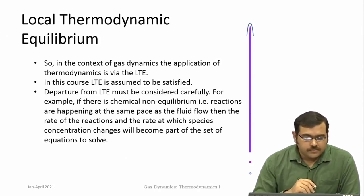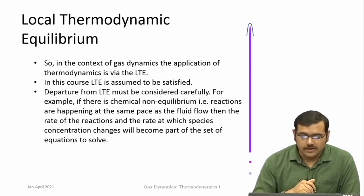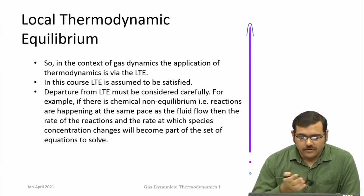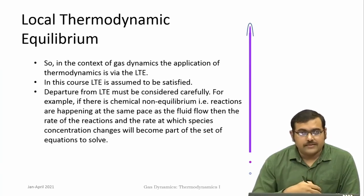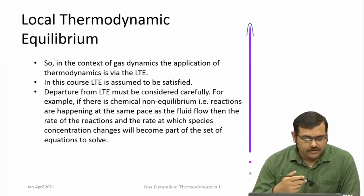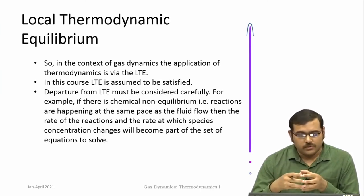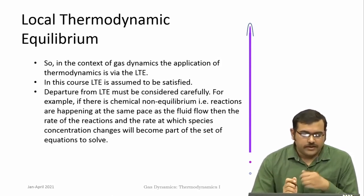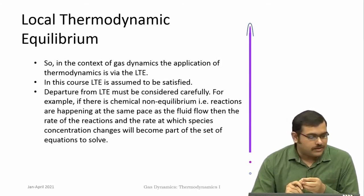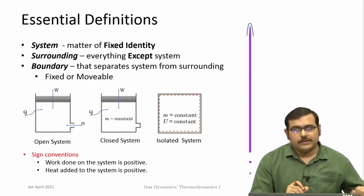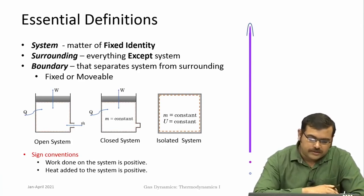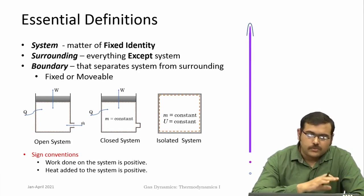Departures from local thermodynamic equilibrium must be considered very carefully. Examples are chemical non-equilibrium in reacting flows, where reactions happen as fast as the fluid flow happens and species change at rates of formation as the flow happens — requiring separate equations for such species. In this course, we will not consider departure from local thermodynamic equilibrium. We will consider only cases which are in continuum and in local thermodynamic equilibrium.